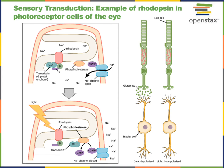When light activates rhodopsin, rhodopsin will activate an enzyme known as phosphodiesterase. Phosphodiesterase catalyzes the chemical reaction that converts cyclic GMP to GMP. Cyclic GMP, or cyclic guanosine monophosphate, is a second messenger molecule that activates a cyclic nucleotide gated sodium ion channel in the membrane of the photoreceptor cells. As phosphodiesterase breaks down cyclic GMP, the cyclic nucleotide gated sodium ion channels close. This causes a hyperpolarization of the membrane potential in the photoreceptor cells.